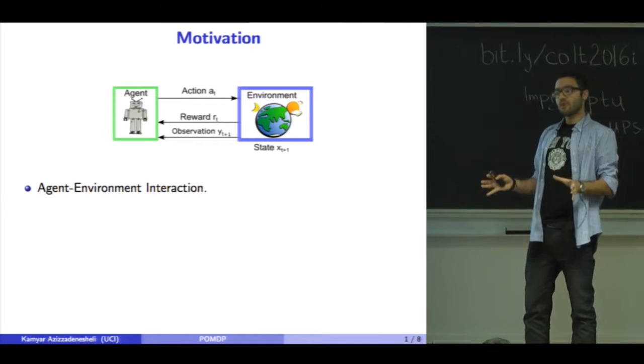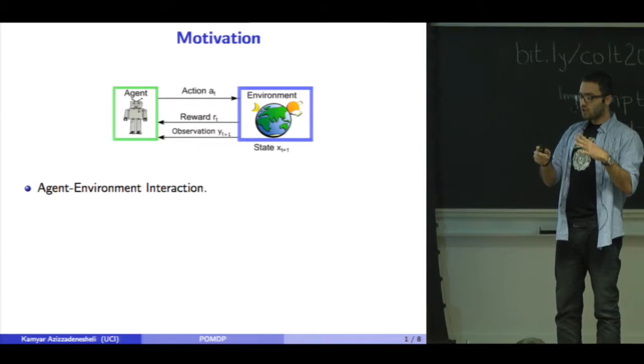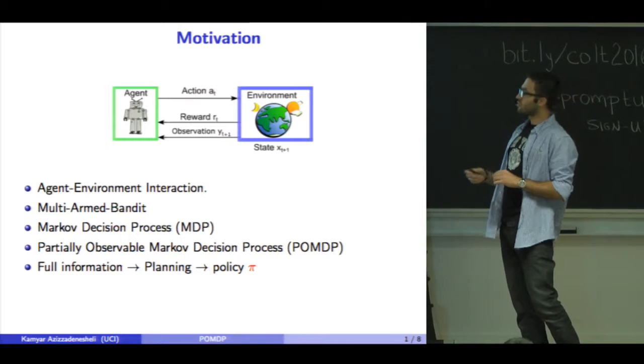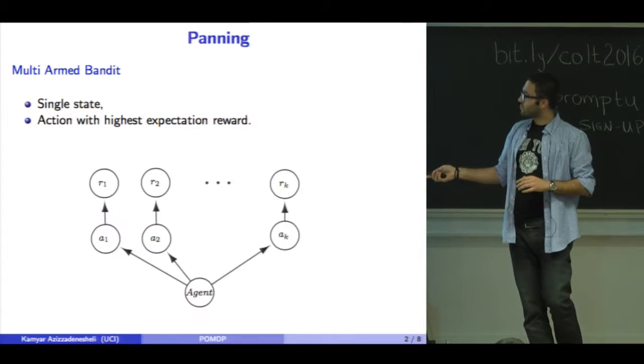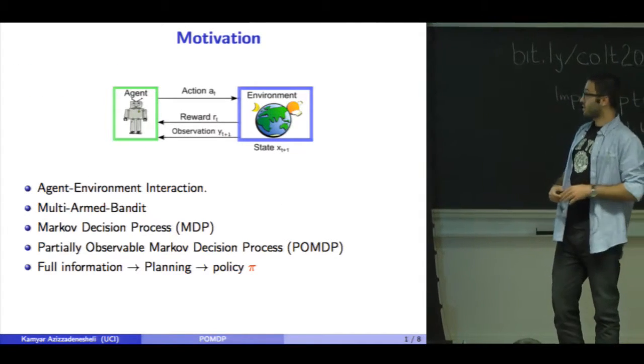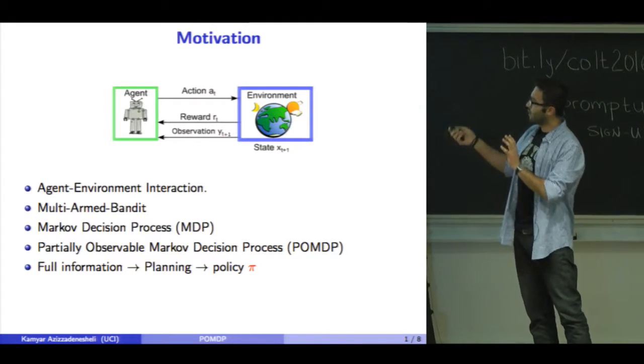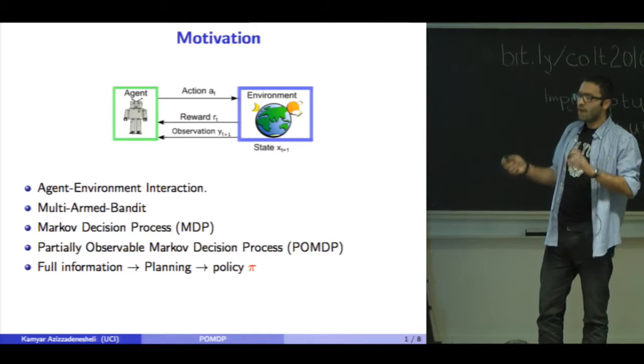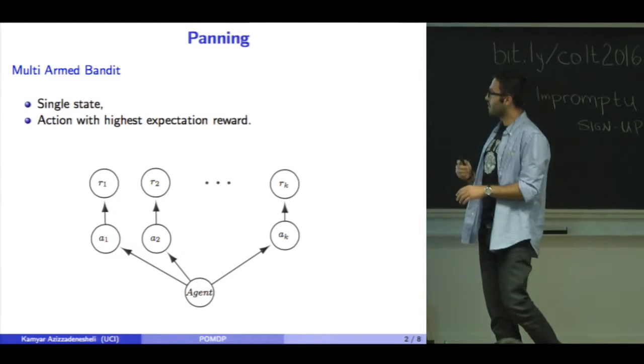In model-based reinforcement learning, we model the environment and solve it. Popular models include multi-armed bandits, Markov decision processes (MDPs), and partially observable Markov decision processes (POMDPs). For now, assume we have full information about the model. The remaining task is to do planning efficiently.